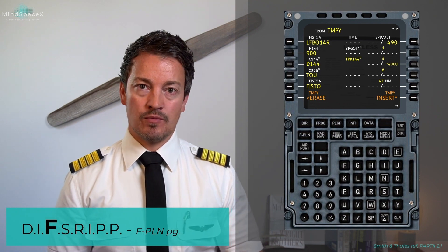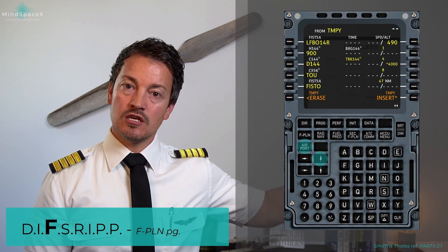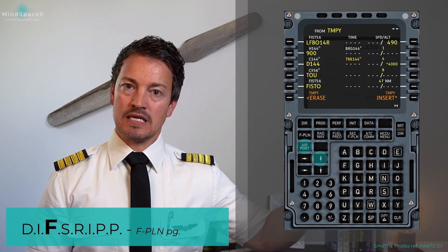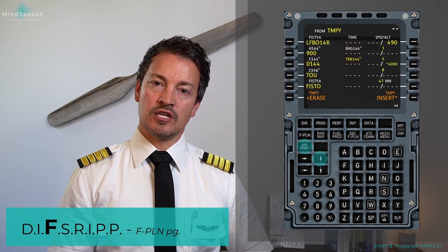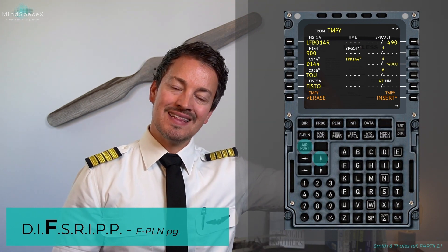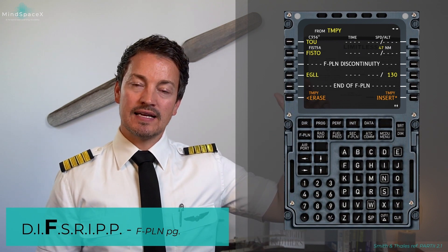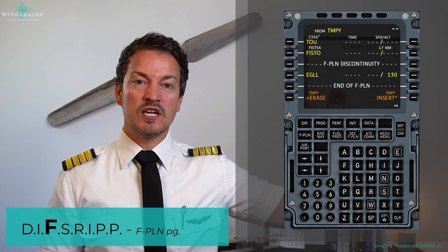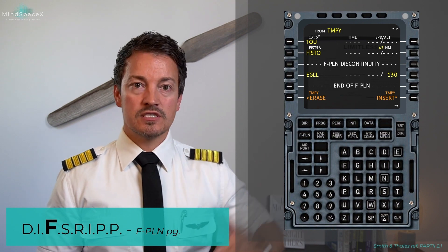I'm not quite done with my flight plan though, because this was only the SID. To show that there's nothing more on the flight plan from this point, I'll use the up arrow to scroll through. The last waypoint we have right now is FISTO. Then there's a flight plan discontinuity and the aircraft doesn't know where to go from there into the arrival airport, which is Echo Golf Lima Lima. We need to tell it that, so we're not quite done.